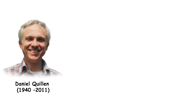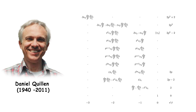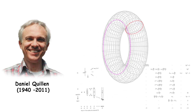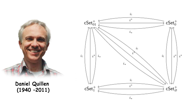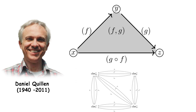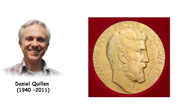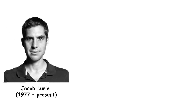Daniel Quillen was an American mathematician known for his work in algebraic K-theory, homotopical algebra, and cohomology. Quillen introduced the concept of Quillen model categories and Quillen adjunctions, which are fundamental in abstract homotopy theory. He was awarded the Fields Medal in 1978 for his contributions to algebraic K-theory.